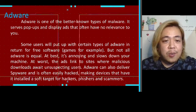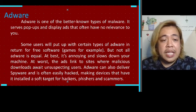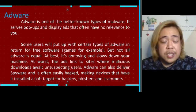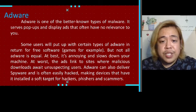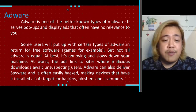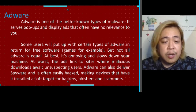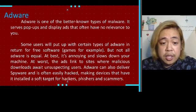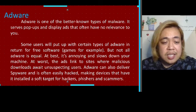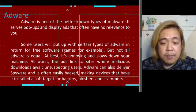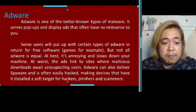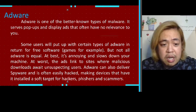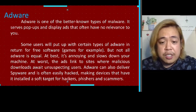Next we have adware. Adware is one of the better-known types of malware. It serves pop-ups and displays ads that often have no relevance to you. Some users tolerate certain types of adware in return for free software, but not all adware is equal. At best it is annoying and slows down your machine. At worst, ads are linked to malicious sites where dangerous downloads await unsuspecting users. Adware can also deliver spyware and is often easily hacked, making devices a soft target for hackers, phishers, and scammers.